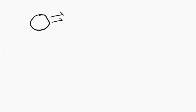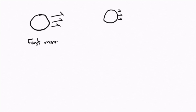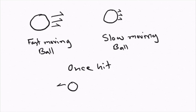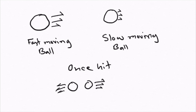Imagine there are two balls moving in the same direction along the same line, and one of them has a higher velocity compared to the other. The first moving ball is going to strike the slow moving ball at some point and transfer some of its kinetic energy to it. The slower moving ball is going to gain some speed and the faster moving ball is going to lose some of its speed.